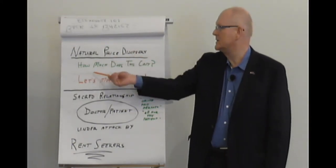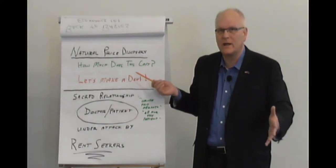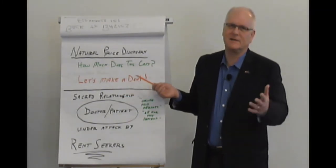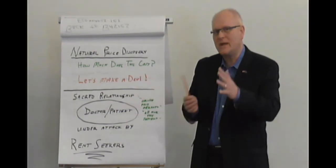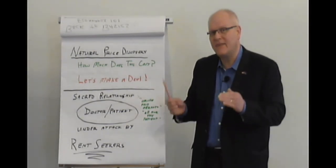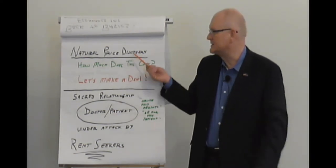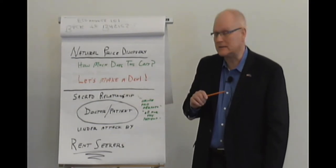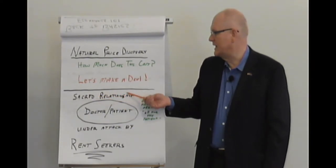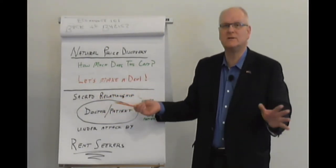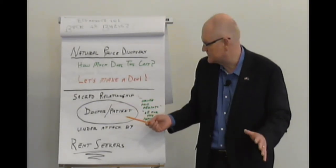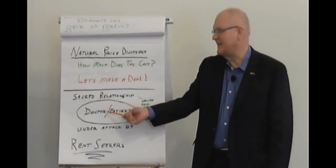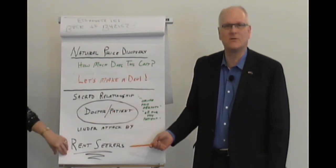Natural price discovery. How much does this cost? Doc, how much is this colonoscopy gonna set me back? And as a corollary to that, we have let's make a deal. I say a thousand bucks, you say ho ho ho, laugh that off, 500. We get together. We make a price. And that price is it. That's natural price discovery. You know going into that exam room what it's gonna cost you. And I know what I'm getting out of this. So we have the sacred relationship of the patient and doctor. The patient-doctor relationship has been sacred throughout the centuries. Hence the motto of the AAPS, all for the patient.